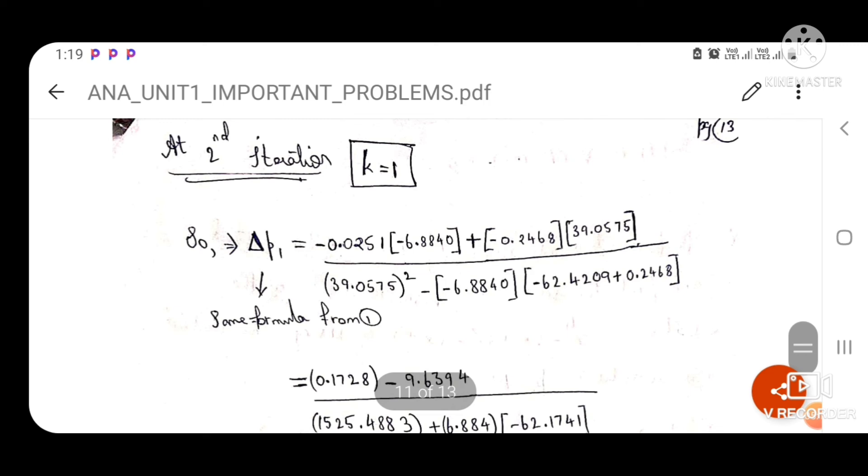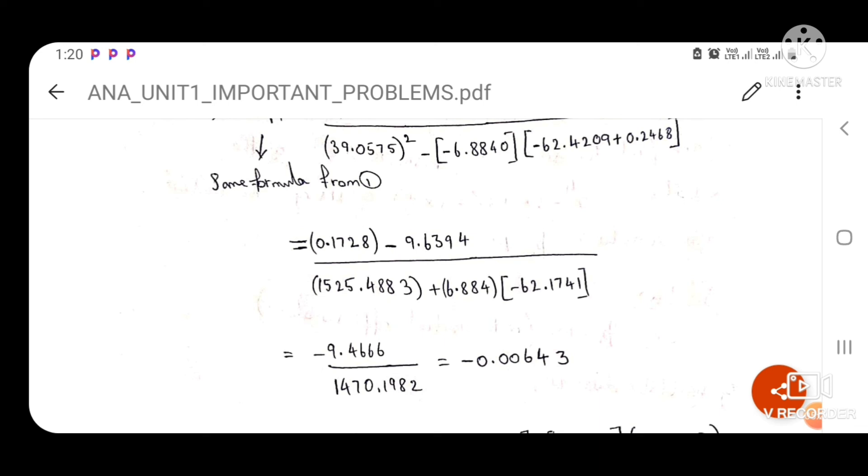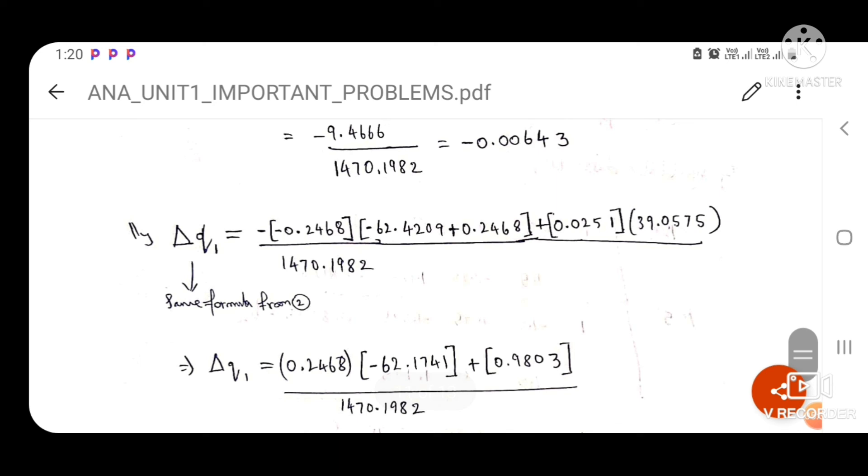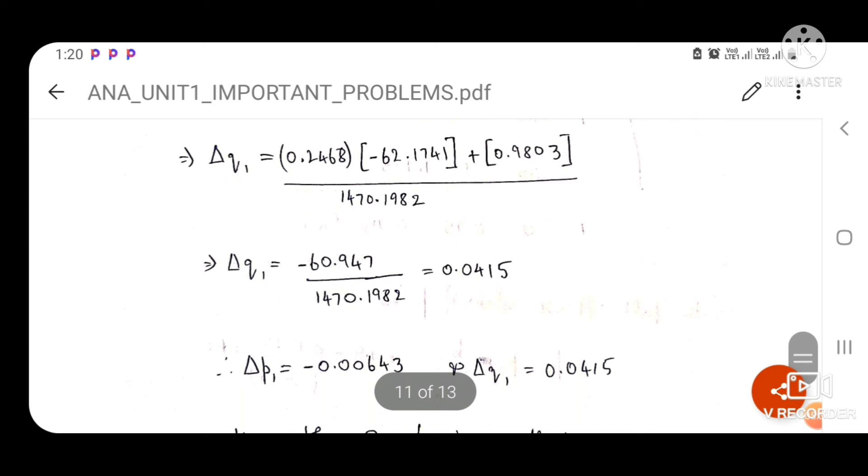At the second iteration, you need to put k equals to 1. By doing that, you get del P1 value to be equal to minus 0.00643. The same thing happens for del Q1, so del Q1 becomes the value of 0.0415. So we have obtained del P1 and del Q1.